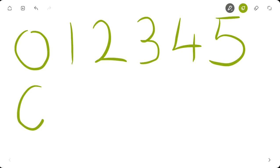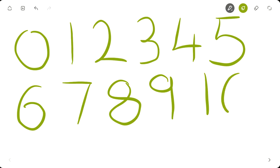So 0 is the first number. It represents nothing. Then we go to 1, 2, 3, 4, 5, 6, 7, 8, 9, and finally 10.